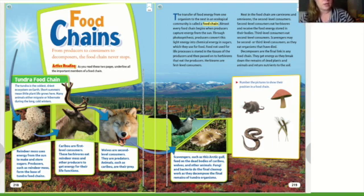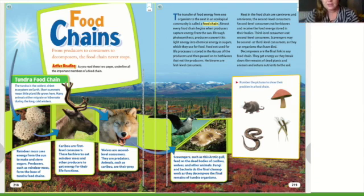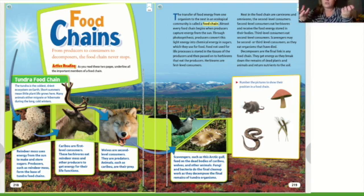We can see that sunlight is going toward reindeer moss, and reindeer moss uses energy from the sun to make and store sugars. Producers such as reindeer moss form the base of tundra food chains. Reindeer moss is actually the name of a plant that animals eat — it's named that because reindeer-like animals eat it. The energy goes from the sun into that reindeer moss, so the reindeer moss has energy.